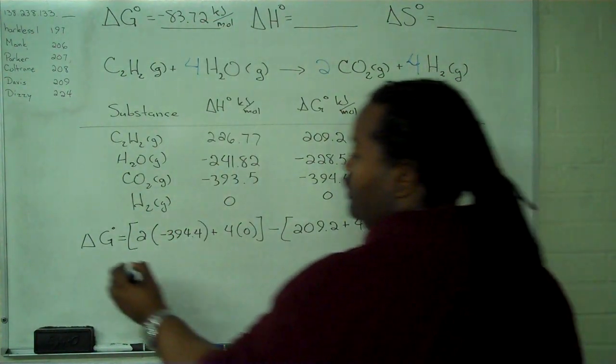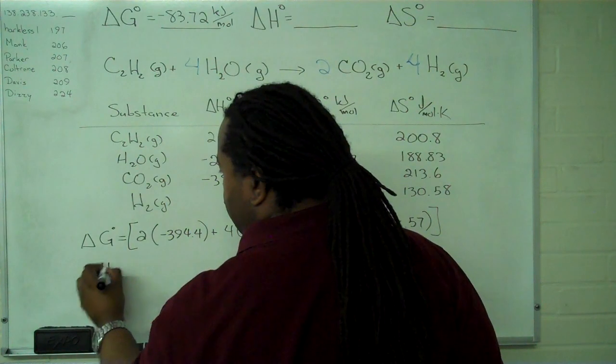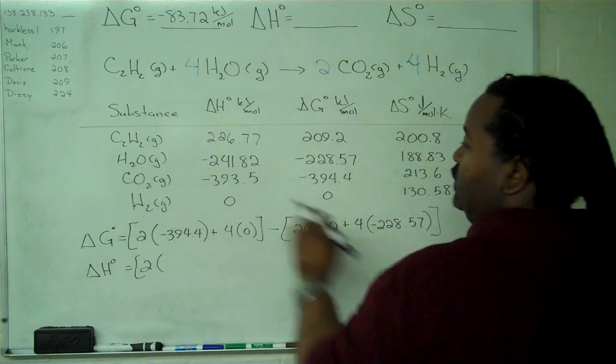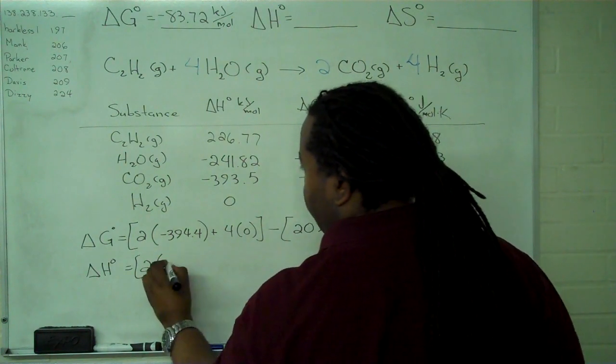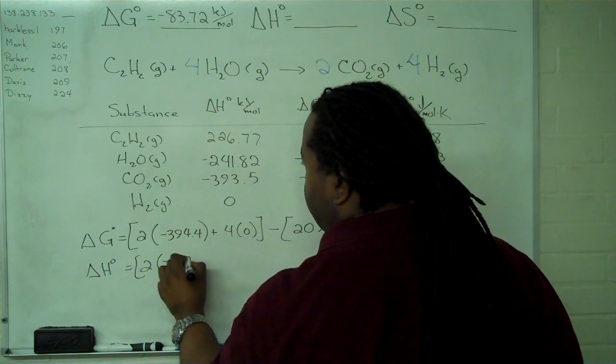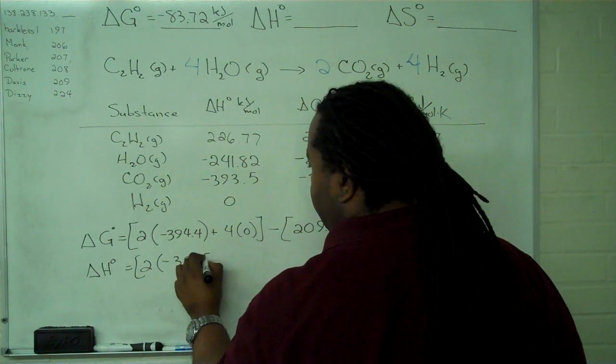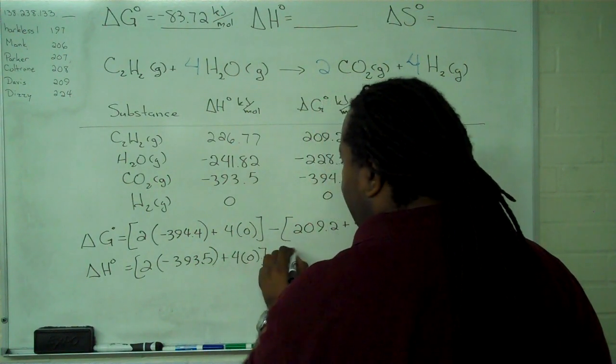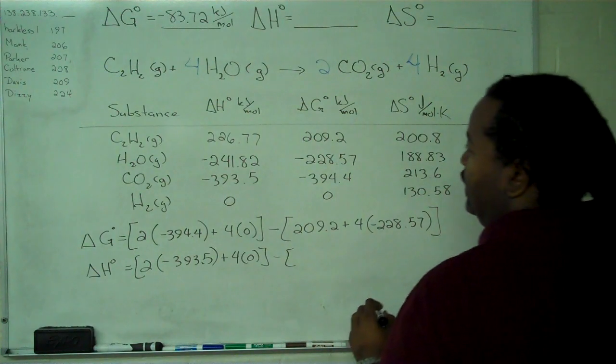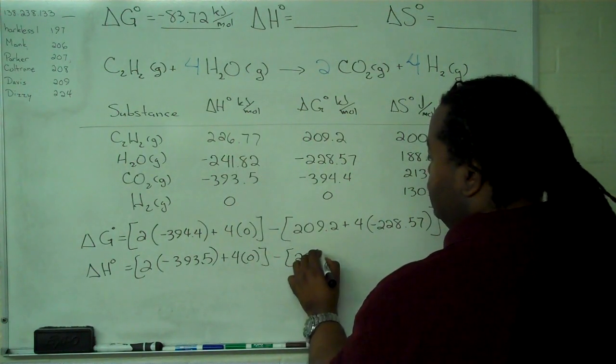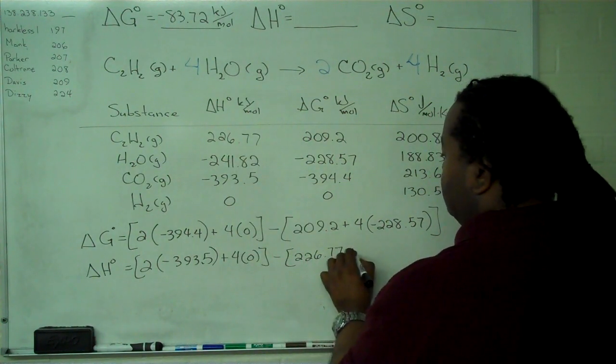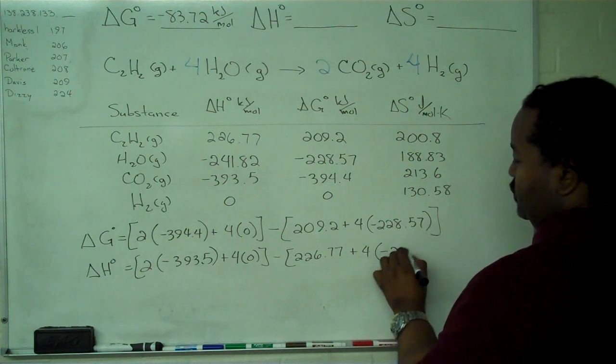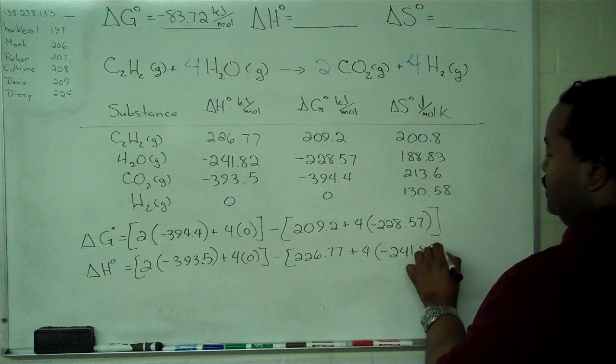We use the same thing for delta H and delta S. So we look in our delta H column, and for our carbon dioxide, 393.5, four times zero. And we're going to have one times 226.77, plus four times negative 241.82.